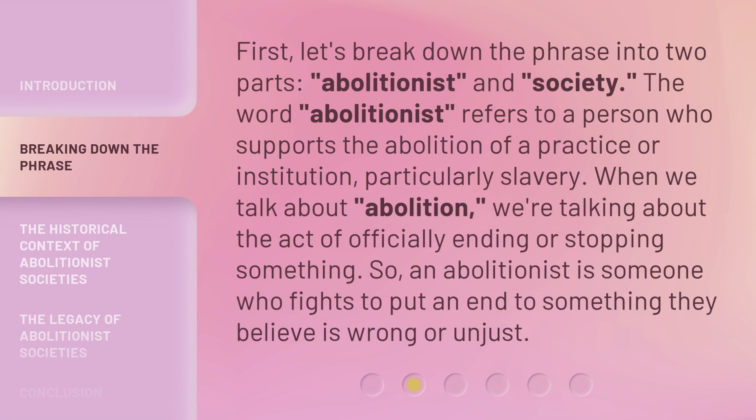First, let's break down the phrase into two parts: Abolitionist and Society. The word Abolitionist refers to a person who supports the abolition of a practice or institution, particularly slavery. When we talk about Abolition, we're talking about the act of officially ending or stopping something. So an Abolitionist is someone who fights to put an end to something they believe is wrong or unjust.